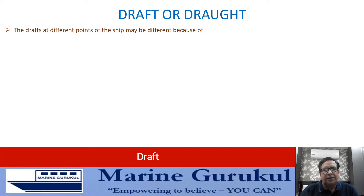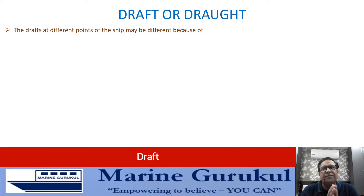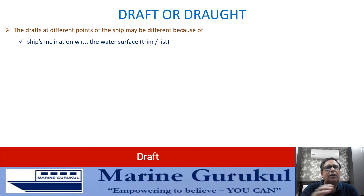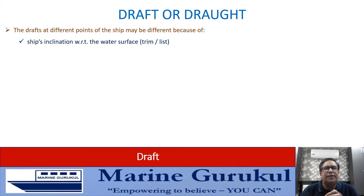Draft is the depth of the ship's hull below the waterline, but is it the same at all points of the hull? No. The draft at different points of the ship may be different because of the ship's inclination with respect to the water surface — that is, trim (longitudinal inclination) and list (transverse inclination). If the vessel is inclined, the keel is not parallel to the waterline and drafts at different points will differ.